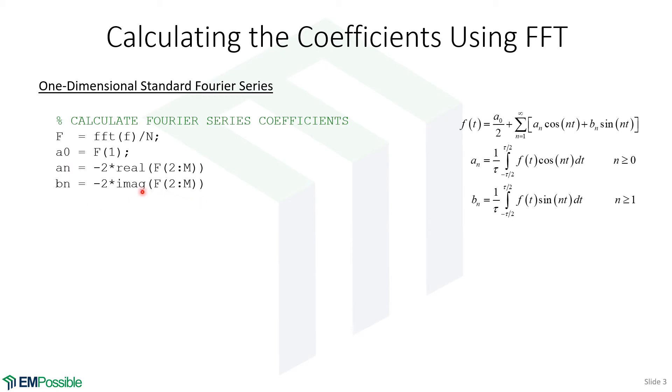Almost the exact same equation, but we're taking the imaginary part of F, and those are our B coefficients. So it's that easy, and we'll have the A naught, the ANs, and the BN coefficients for our Fourier series.